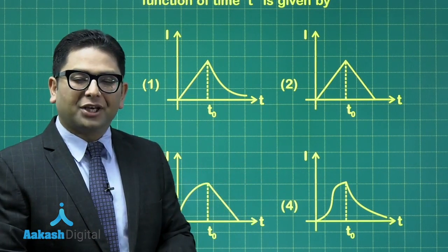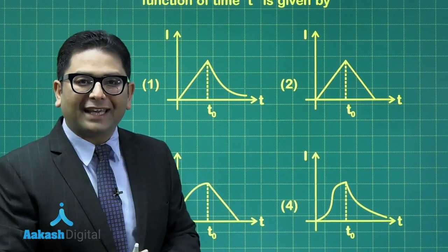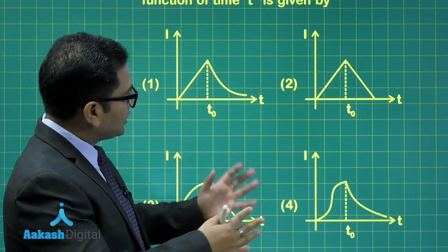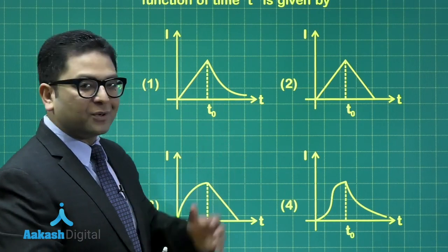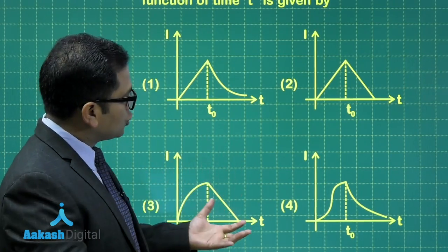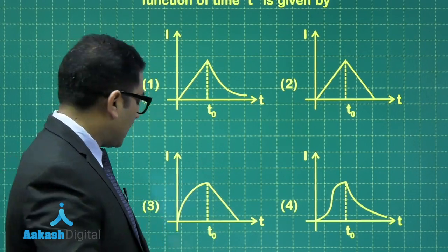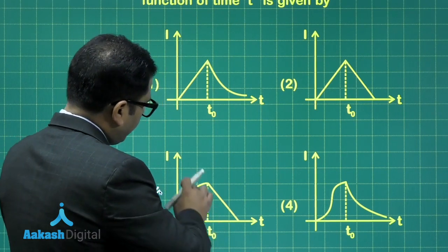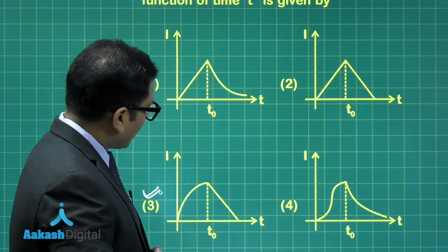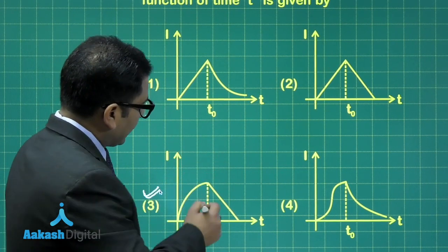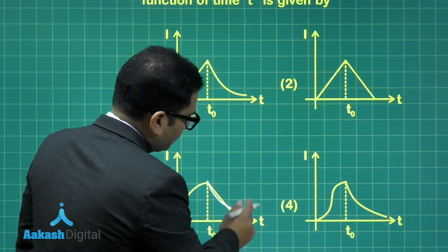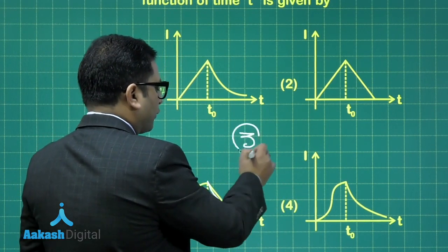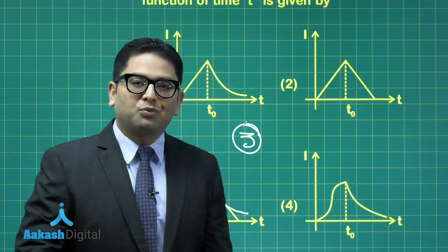But after time t0, you know, the current has to decay exponentially with respect to time. And here, unfortunately, none of the option has been given with an exponential decay. So if I were to choose the best option among four, I would give my vote to option number three, that initially it resembles to an RL charging circuit, the exponential one. And after that, it had to decay exponentially. But fair enough, out of these things, the best option I would vote would be for option number three. So that was question number two.